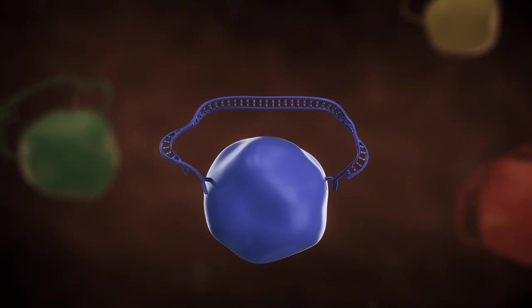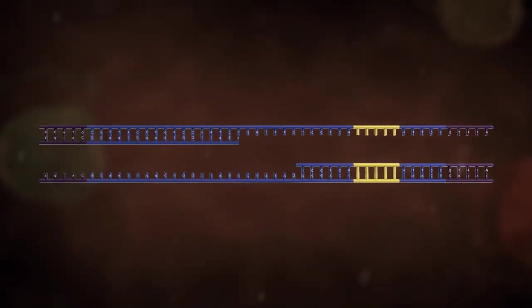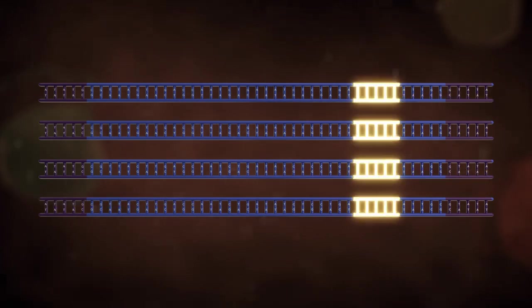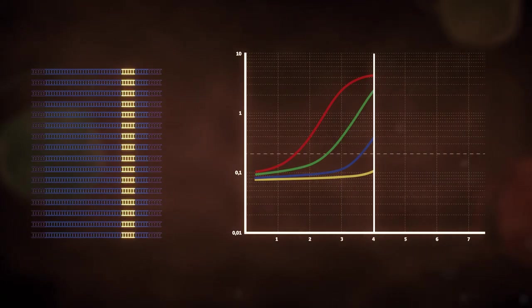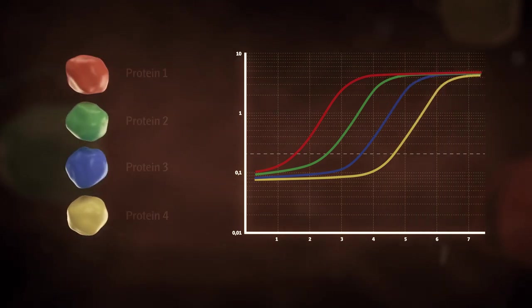The number of qPCR cycles is related to the concentration of the protein in the sample. Data is then processed through software reporting the relative concentrations of the proteins in each sample.